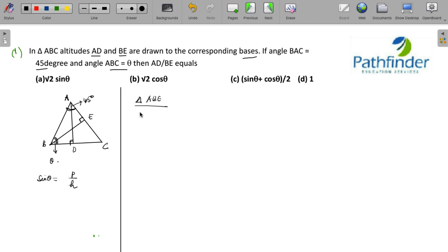In triangle ABE, sine of 45 degree must be perpendicular that is BE upon AB.